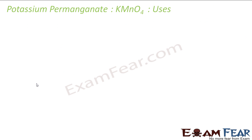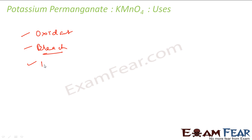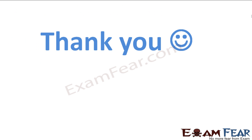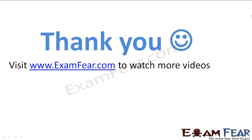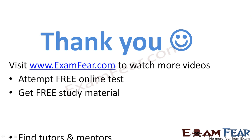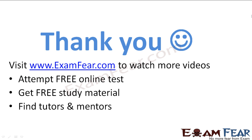The uses of KMnO₄: it is used as an oxidant in organic chemistry and is the most popular oxidant there. It is used to bleach wool, cotton, and silk, and also for decolorization of oils. Visit examphia.com to watch more videos, attempt free online tests, get study materials, and find tutors and mentors.